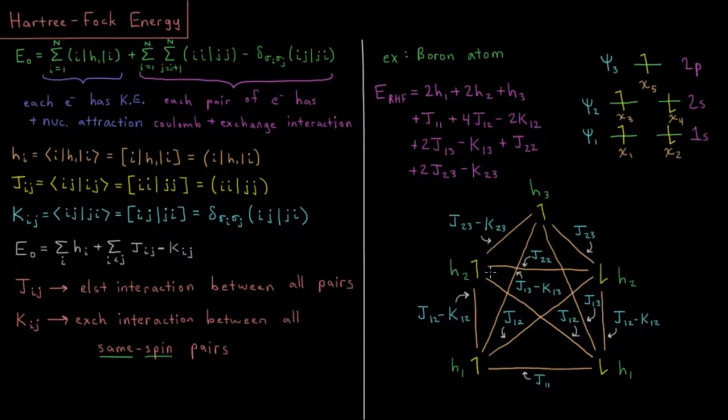So H1, H1, H2, H2, H3. So that's 2H1 plus 2H2 plus H3 for our one electron energy, all of these terms.